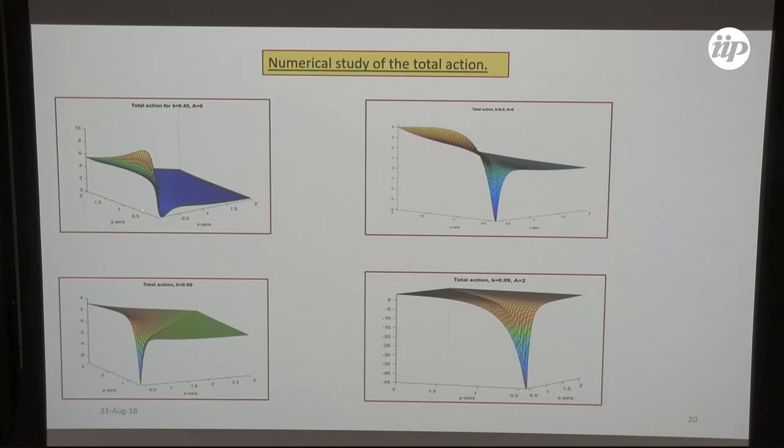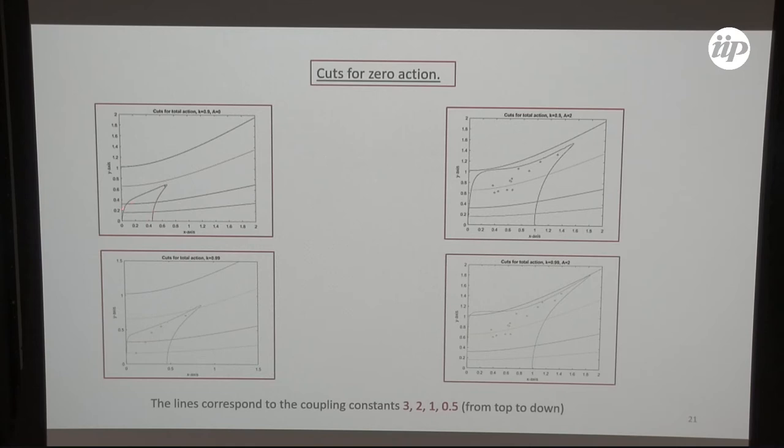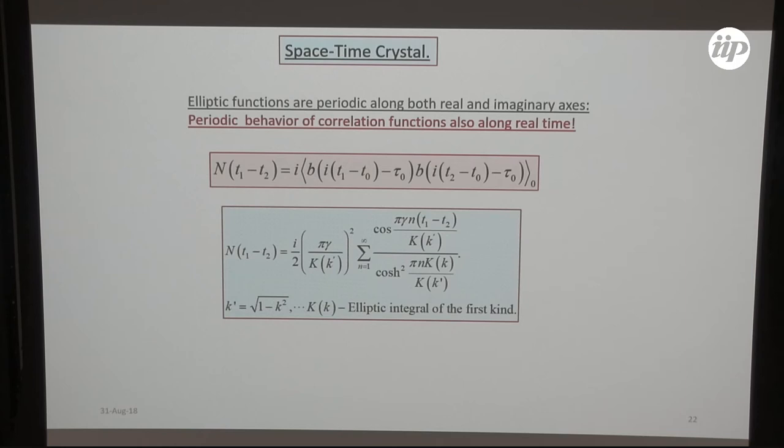This is total action. I take this K modulus 0.45, and then I still have only positive values of this action. Then I take larger K and then I get already negative possibility of negative region, and here also negative. If I make cuts, these cuts, when the action difference is 0 here, and these lines correspond somehow to self-consistency equation that should be satisfied.